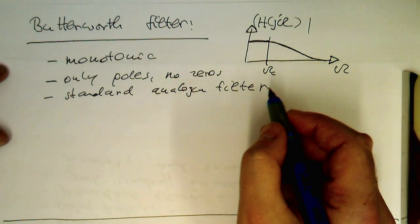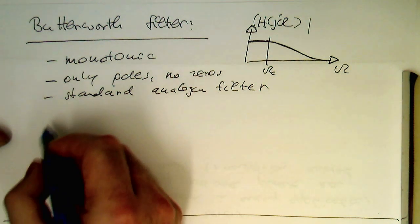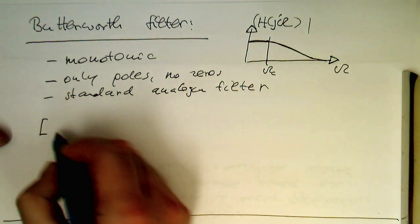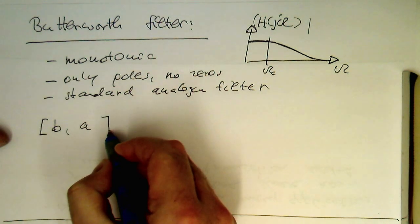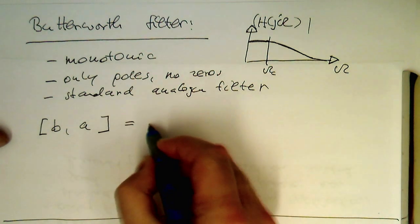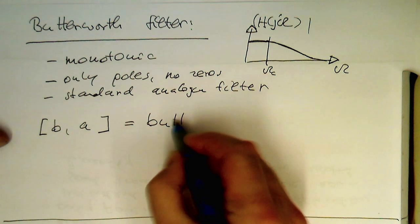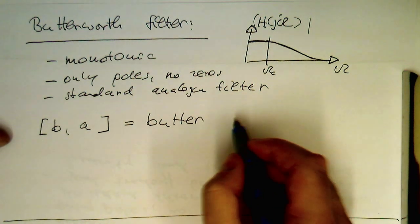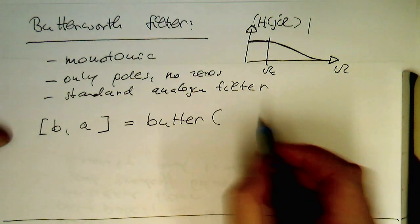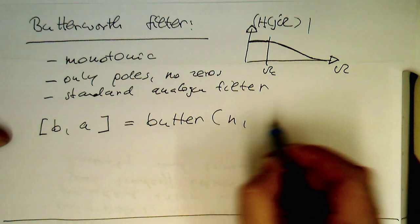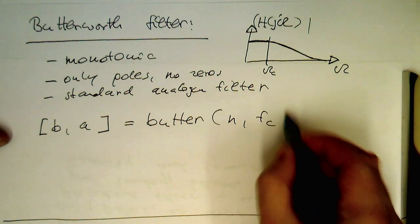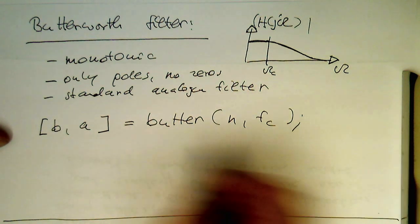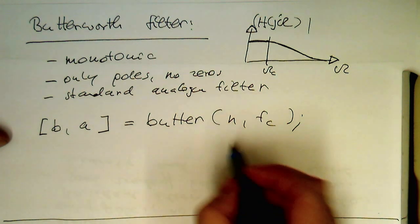So how do we create our filter here in Octave or MATLAB? And that's very simple. So these are our digital filter coefficients. And we just write butter, and then N, FC, and this creates a Butterworth low-pass filter.